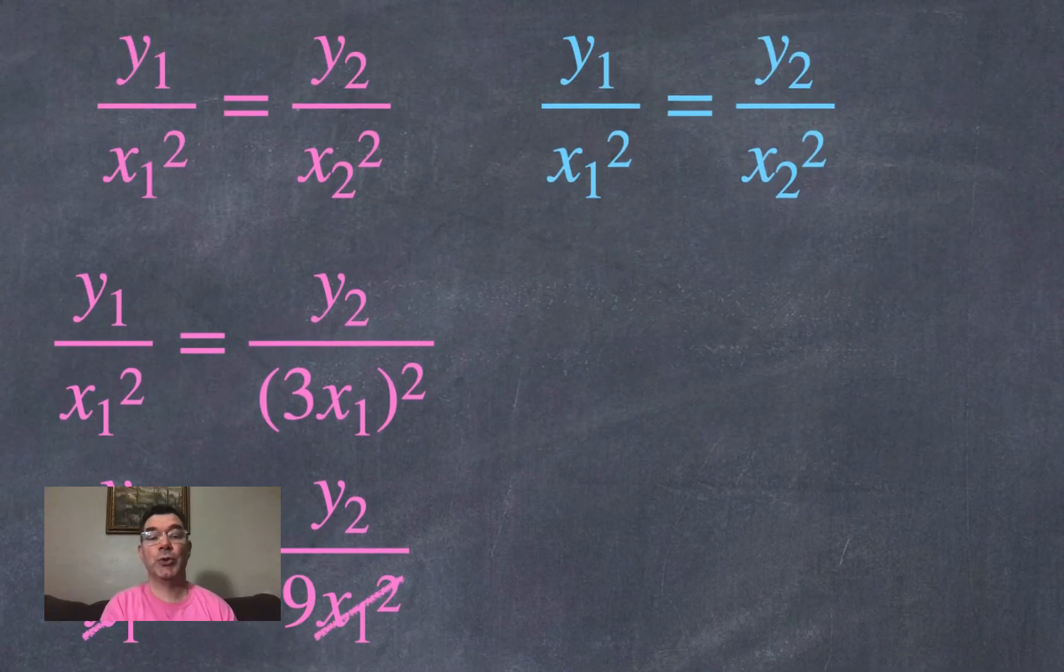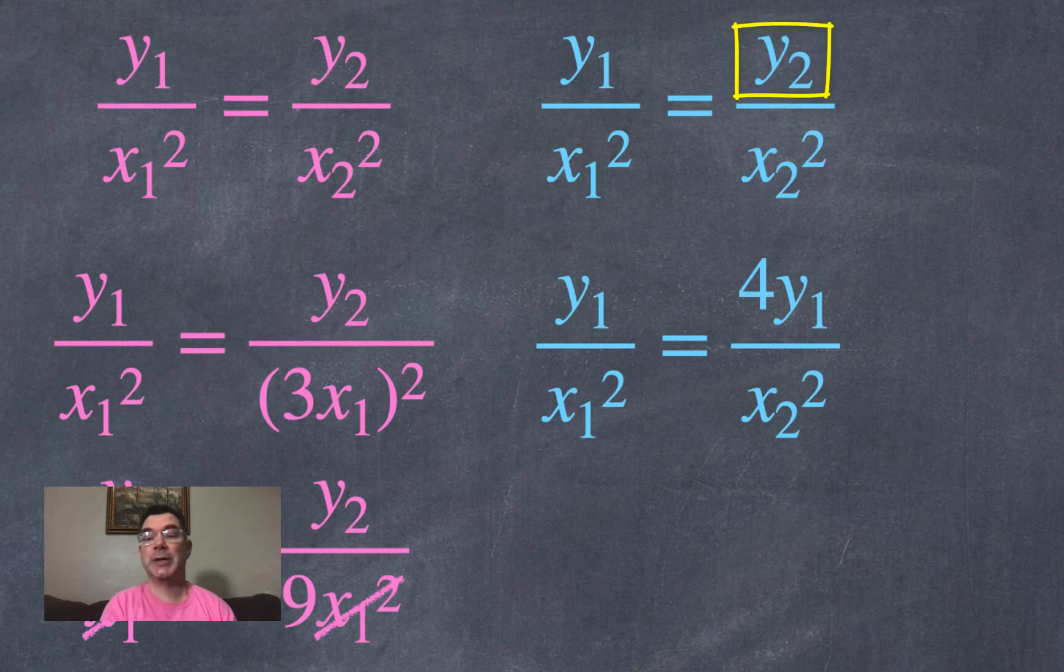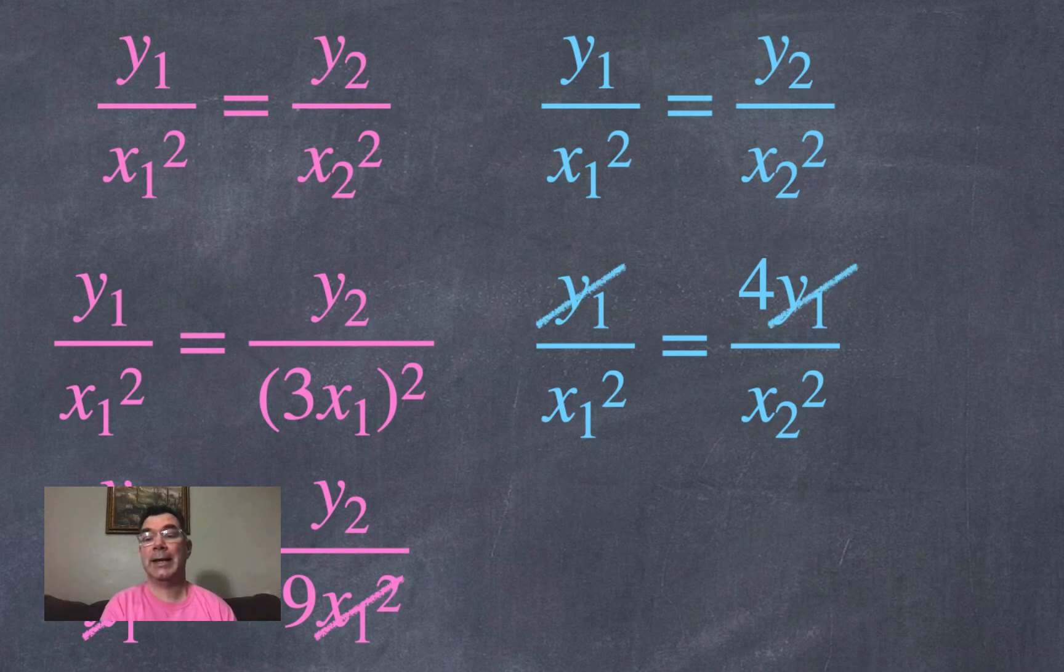So now let's answer the blue question. What happens to x if y is multiplied by 4? So I'm setting it up the same way as before, but now it is y2 that is being replaced with 4 times y1 because that's what's happening. The second y is 4 times the first y. And again, I can cross out the y1s. I can divide those out of each side of that equation.